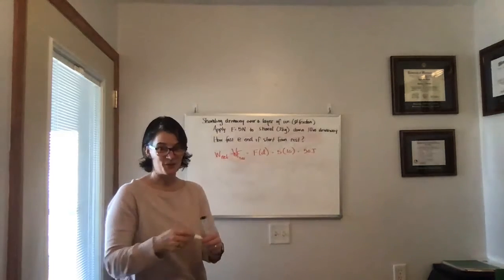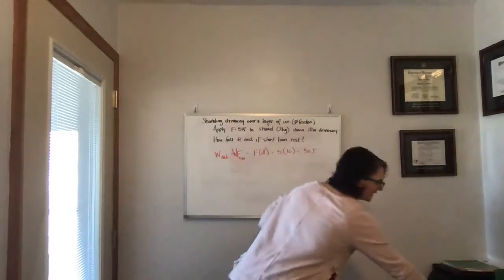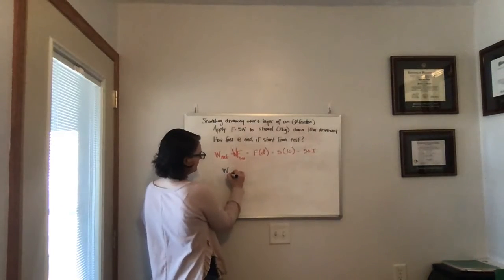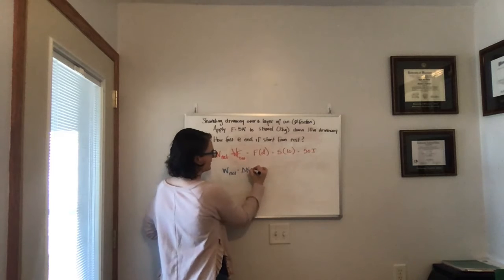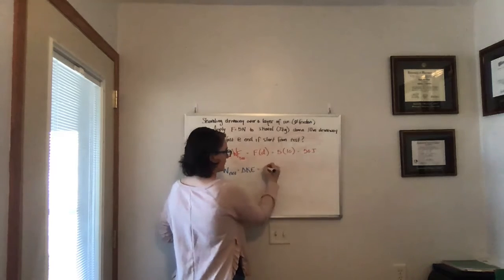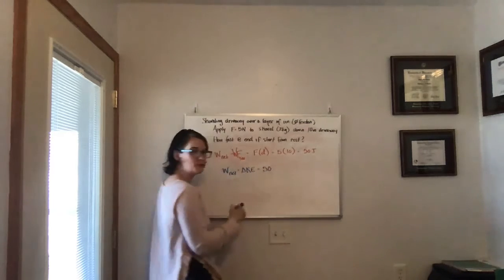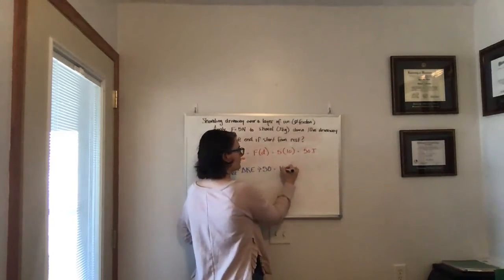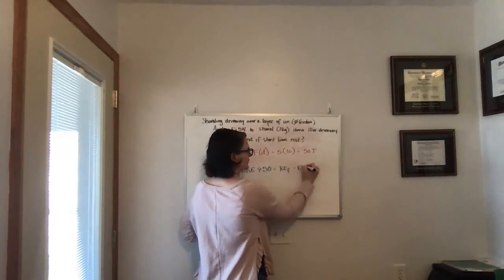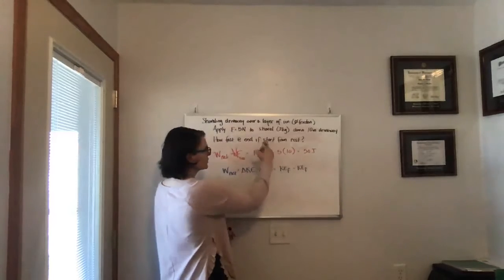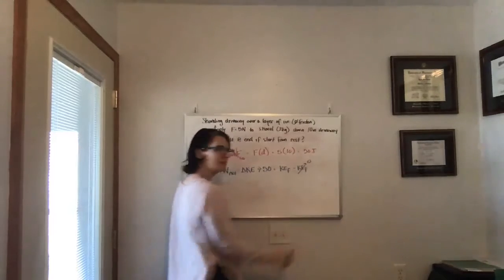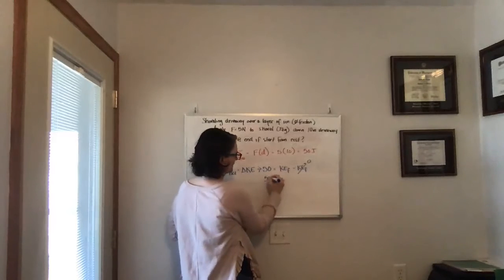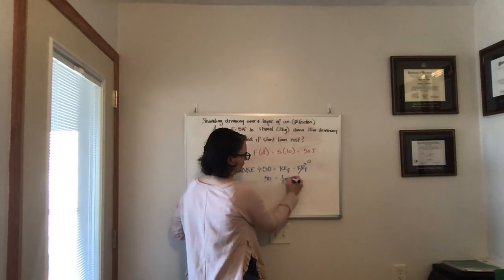All right. We also know that the net work is equal to the change in kinetic energy. So we keep that in mind. We know that the net work, which we've determined as 50 joules, must equal our final kinetic energy minus our initial kinetic energy. Well, we're told we start from rest, so there is no initial kinetic energy. So 50 must equal our final kinetic energy.